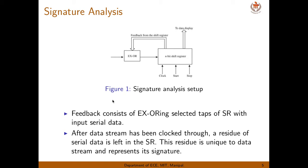Consider a full adder example. We have 8 possible outputs for carry-out and 8 possible outputs for sum. We apply the input sequence from 0,0,0 to 1,1,1. The output for carry-out will be 0, 0, 0, 1, 0, and then three 1s. That sequence is applied first, and after passing through 8 clock pulses, the residue remaining in the shift register corresponds to the signature of that sequence.